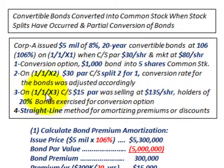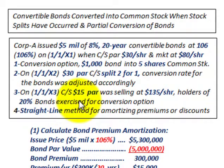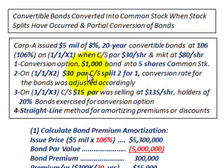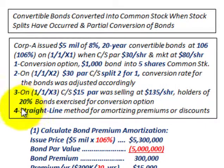On 11x3, the common stock had a $15 per share par value and it was selling at $135 per share, and the holders of 20% of the bonds exercised the conversion option. That $15 par value is based on the fact that on 11x2 we had that two-for-one split, so there are twice as many shares outstanding and the $30 par per share is reduced down to $15 per share. We're going to use the straight-line method for amortizing the premium.